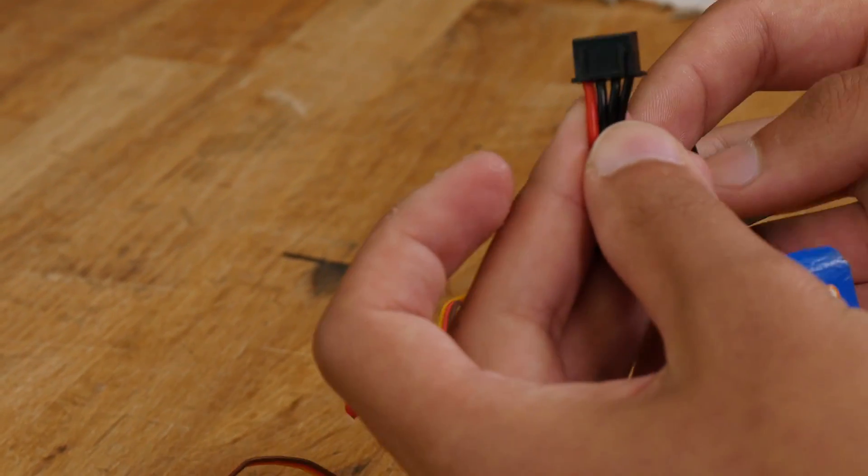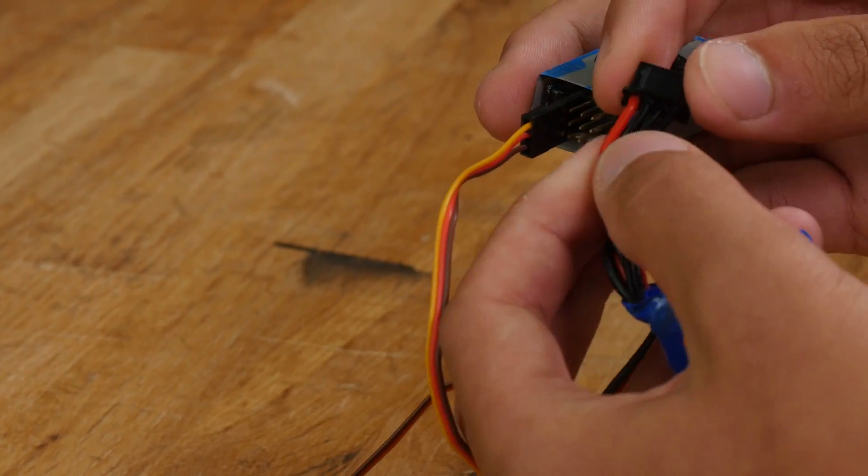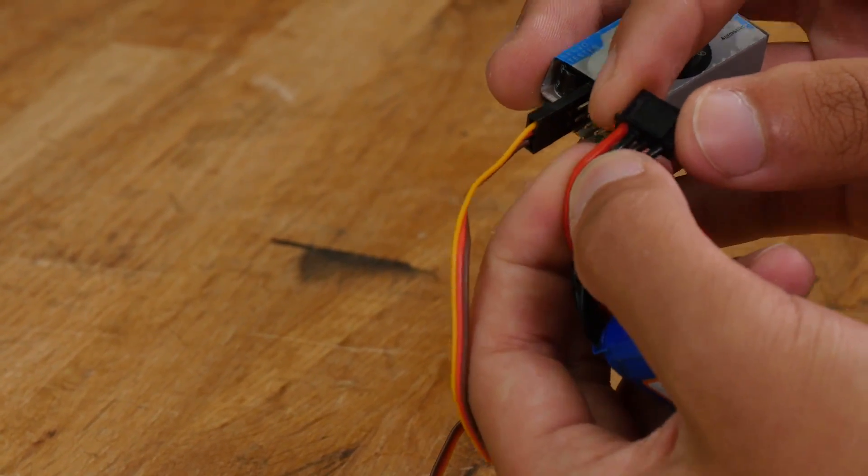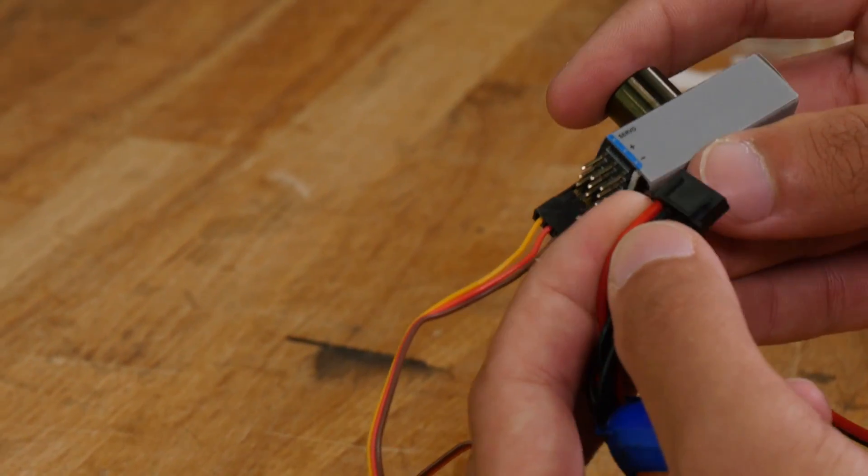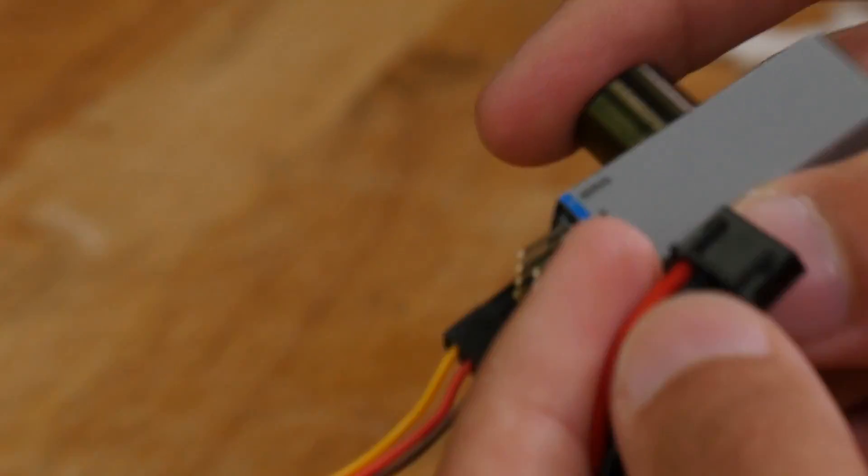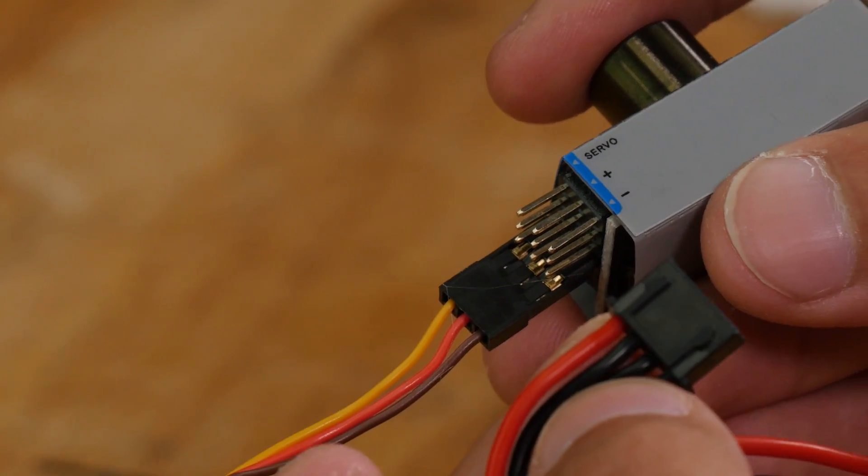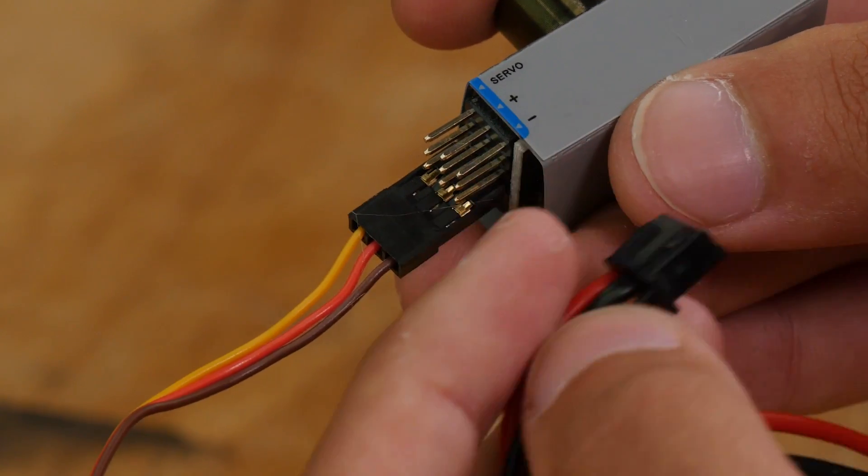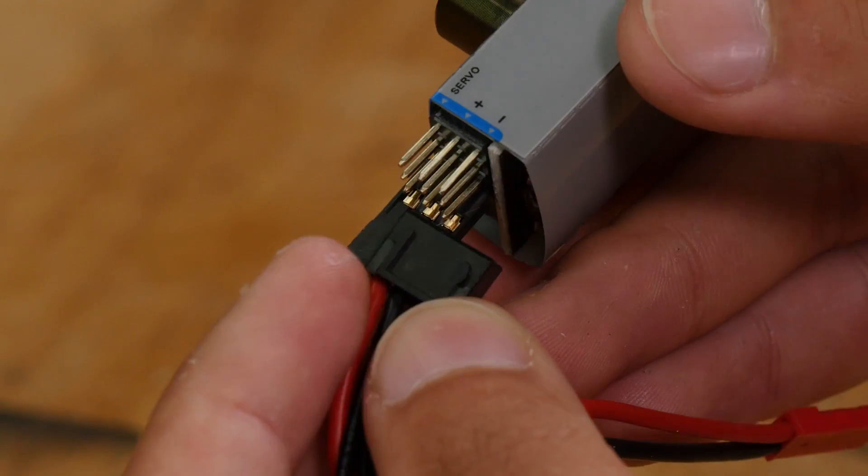When you plug your battery in, take the balance connector and locate the farthest red wire on the outside—that one will go to the positive rail. The next wire over, whatever color it is, will go to the negative rail. So when you plug it in, it'll look like this.